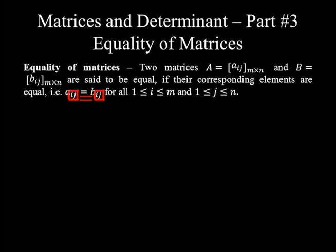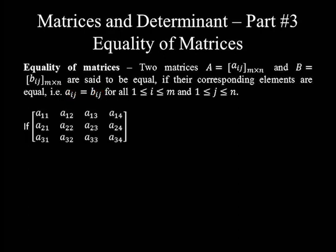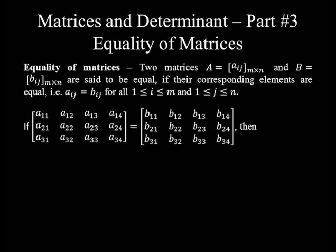Let me illustrate this definition using two matrices expressed in the form of A sub ij and B sub ij. If the first matrix with an order 3 by 4, expressed in terms of A sub ij, is equal to the second matrix of the same order expressed in the form of B sub ij, then the first row, first column entry on the left — that's A sub 1 1 — equals the first row, first column entry on the right — that's B sub 1 1.